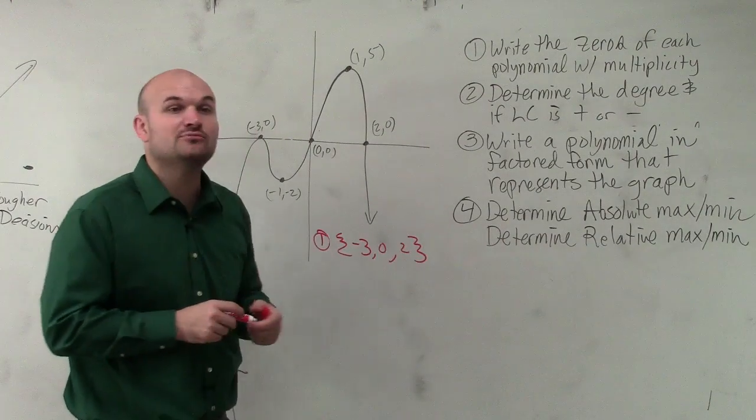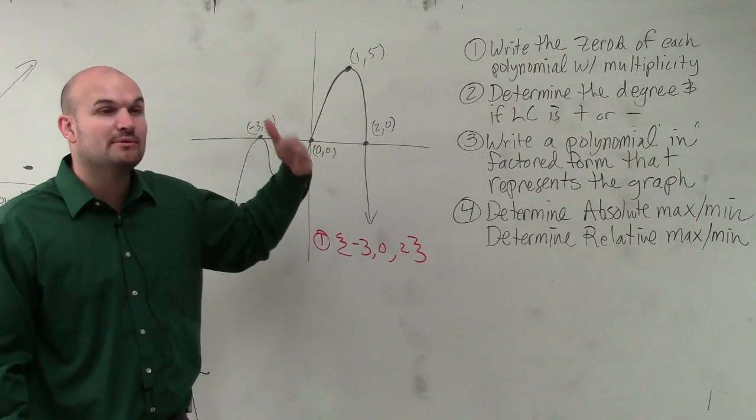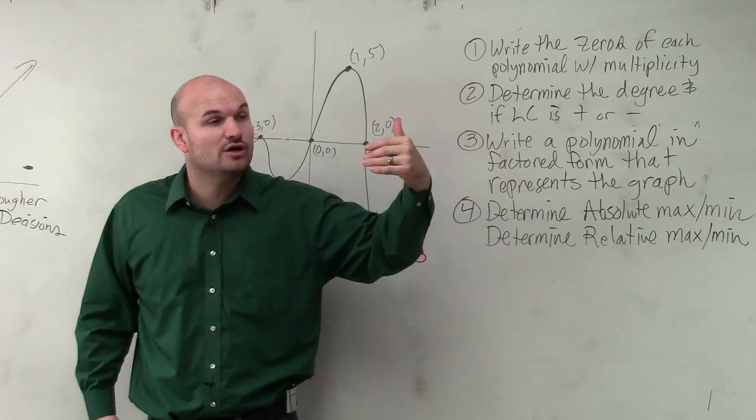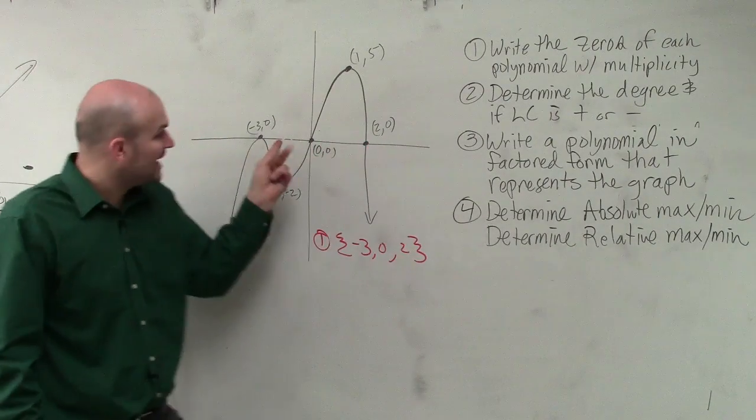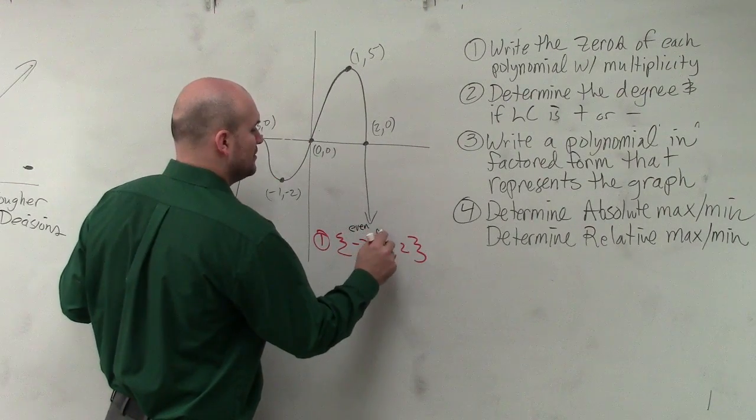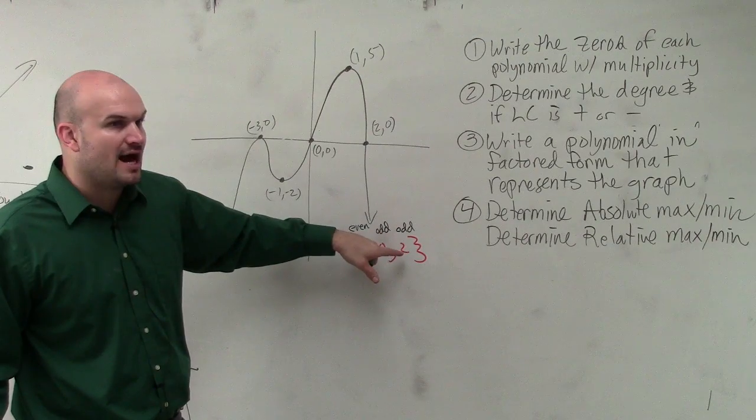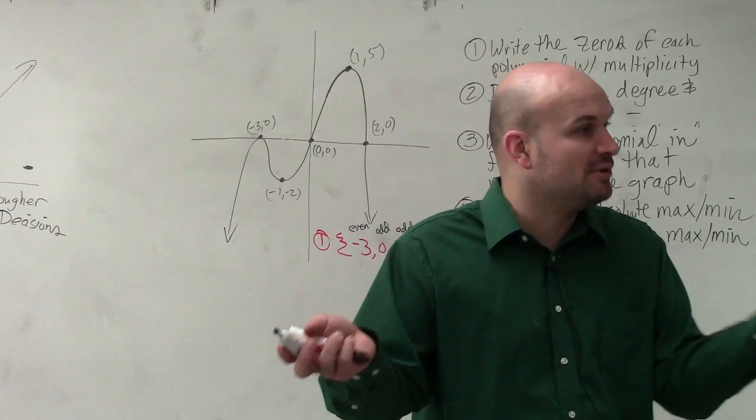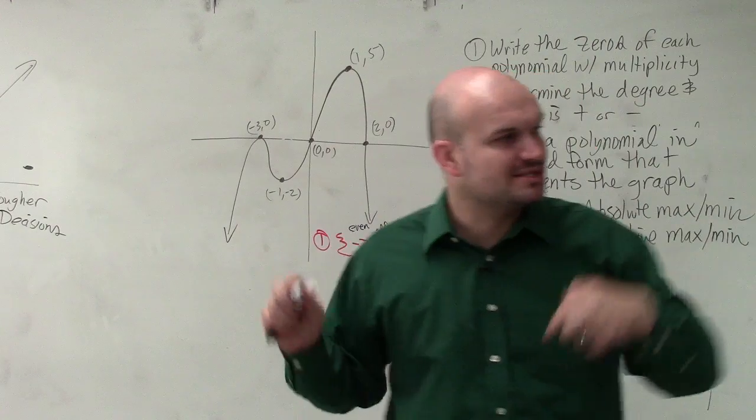Now the other thing they asked is include multiplicity. Remember, we know that when the multiplicity is even the graph bounces. When the multiplicity is odd, the graph crosses. I don't really know what the multiplicity is - it could be 2, 4, 6, 8 - but I know that multiplicity is even. So I'm just going to write even, odd, and odd because they cross and cross. If I had the equation I would know what the multiplicity is, but I can't assume that.